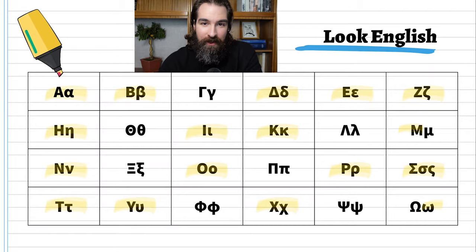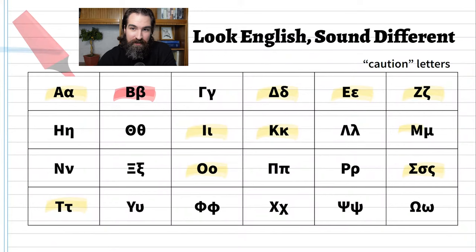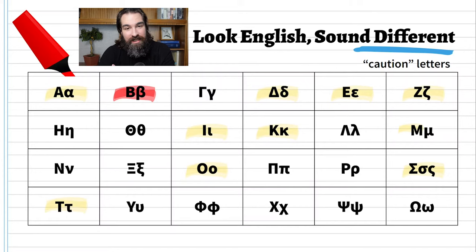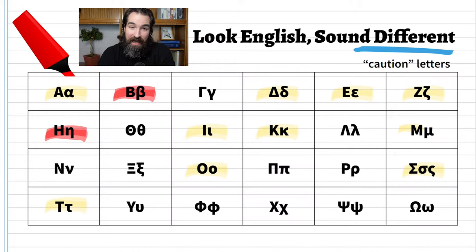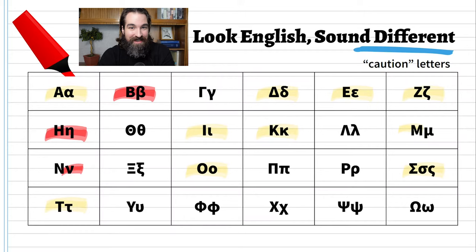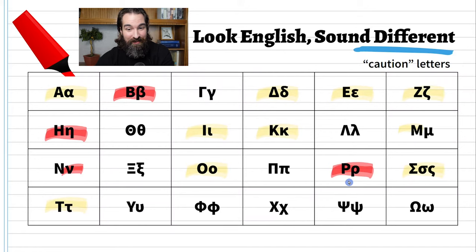Here's the trick: some of them look English but they sound different. The second letter of the Greek alphabet looks like a B, but it actually makes a V sound — it's called vita. The eta looks like an H or a lowercase n, but it's actually a vowel that makes a long E sound. The letter that looks like an uppercase N makes an N sound, but the lowercase looks like a V — don't confuse it with vita.